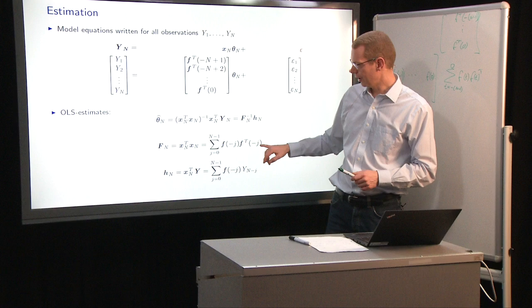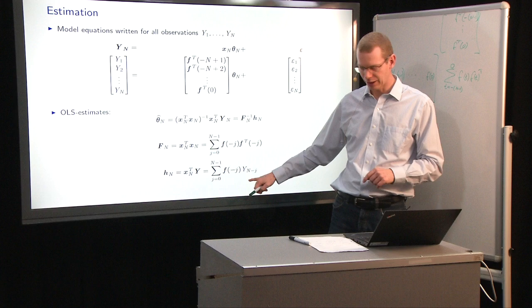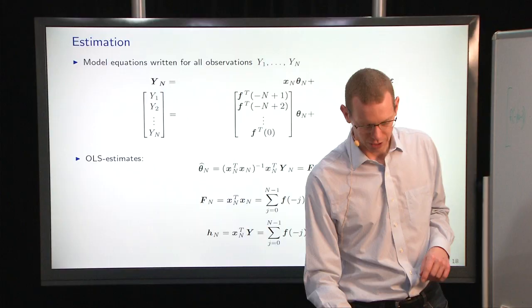This becomes the sum from time equal minus n minus 1 here to 0 of F of t, or maybe I should have used j, times F t transpose. So it's the outer product of those two. That's what I have down here, just with a different indexing. And you can do the similar thing for H.